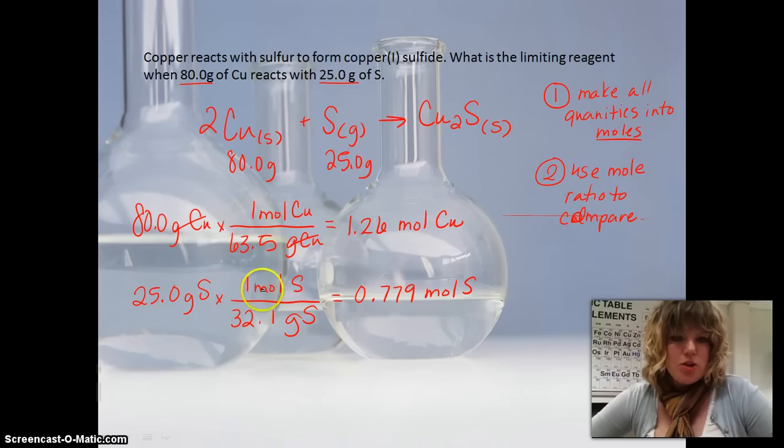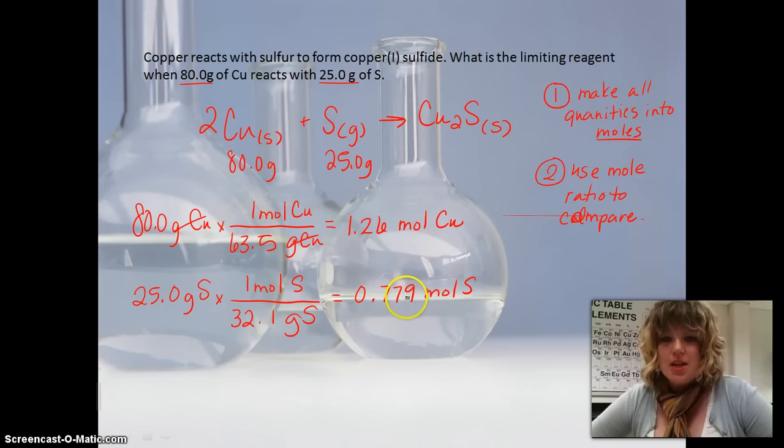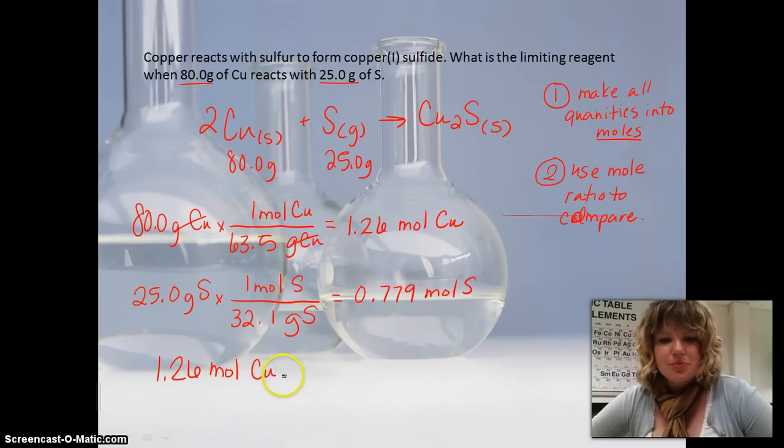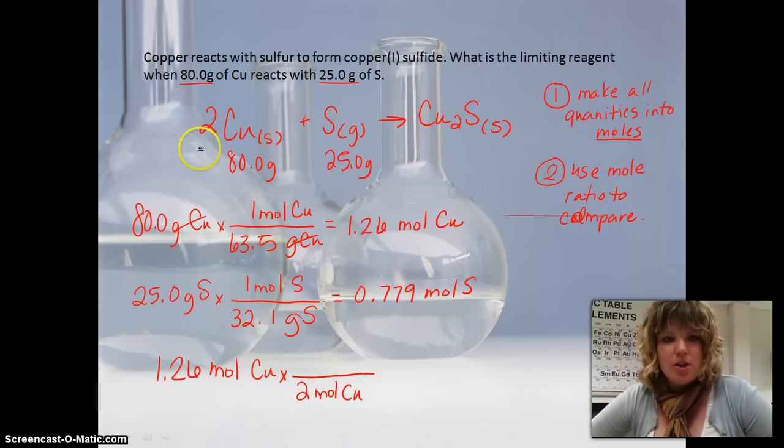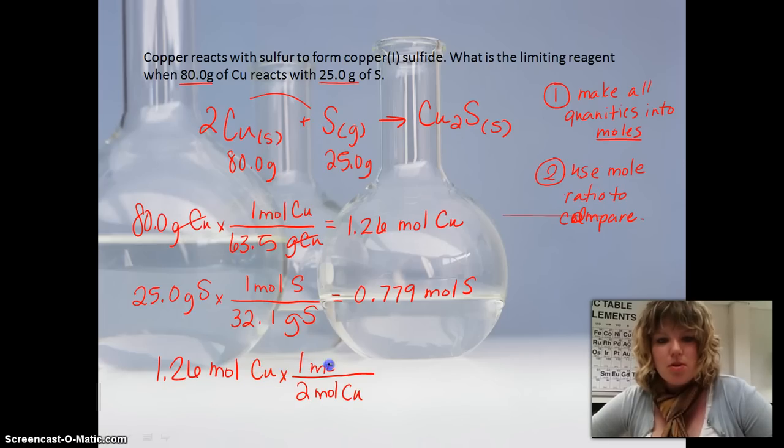Now you can pick either one of these. Either one you pick, you'll end up with the same answer. You just need to do one calculation though to compare. So I always just use the top one. 1.26 moles of copper. And then we use our mole ratio, and there's two moles of copper. And we get that from that balanced chemical equation. And we use the mole ratio between these two, and there is just one mole of sulfur.